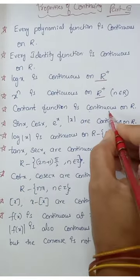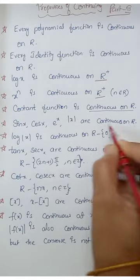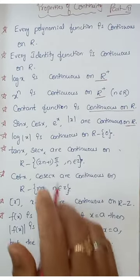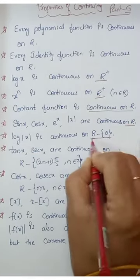Constant function is continuous on R. sin, cos, e to the power x, mod of x are continuous on R. log mod of x is continuous on R minus zero.